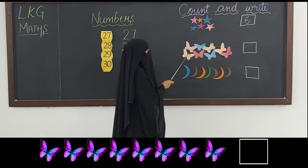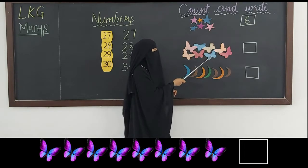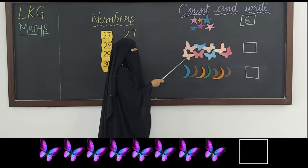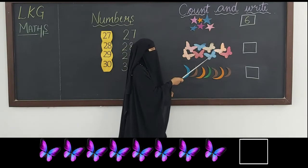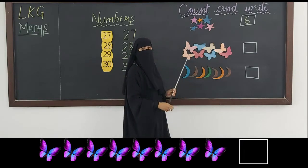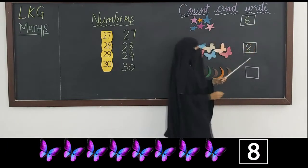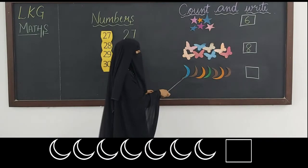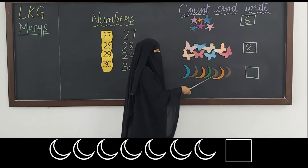Now let us count how many butterflies there are. 1, 2, 3, 4, 5, 6, 7, 8. How many butterflies do we have altogether? We have 8 butterflies. Let us write 8 in the box.